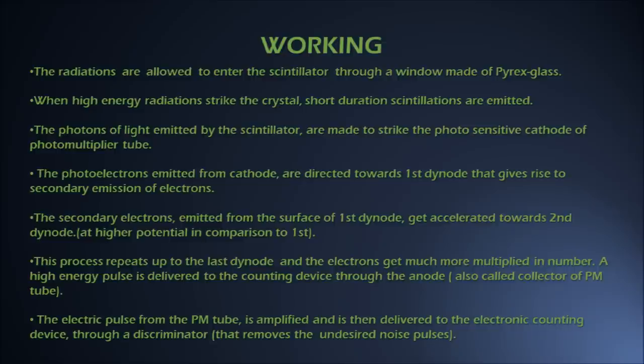The electric pulse from the PM tube is amplified and then delivered to an electronic counting device after passing through a discriminator. The discriminator removes the undesired noise pulses.